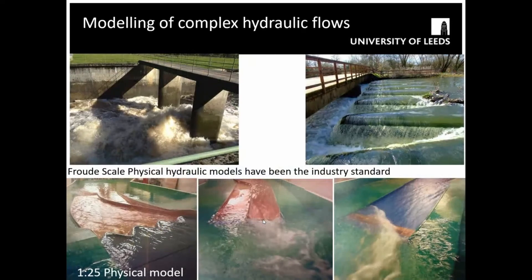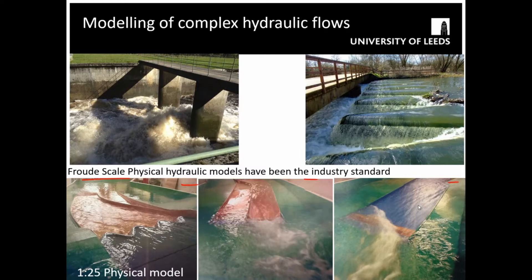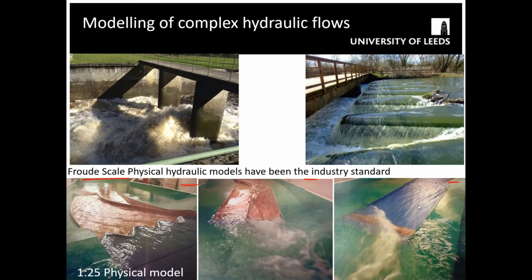Traditionally we would use physical scale hydraulic models — here's an example, a 1 in 25 physical scale model near Skipton. Nice things about physical scale models: you can make changes quite easily, they're intuitive, you can change sidewalls and see what happens, and they're well understood by industry. However, they get taken apart as soon as the build's done, they're expensive, and there are limitations. The idea of using computer models to help is important, but that's also not trivial.